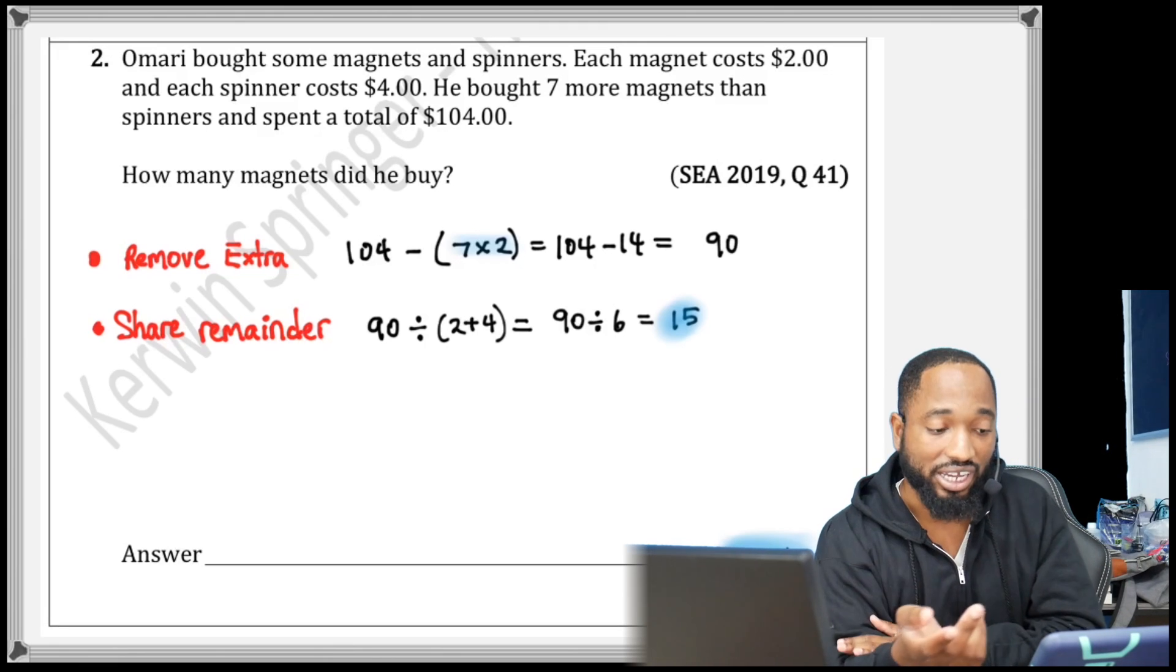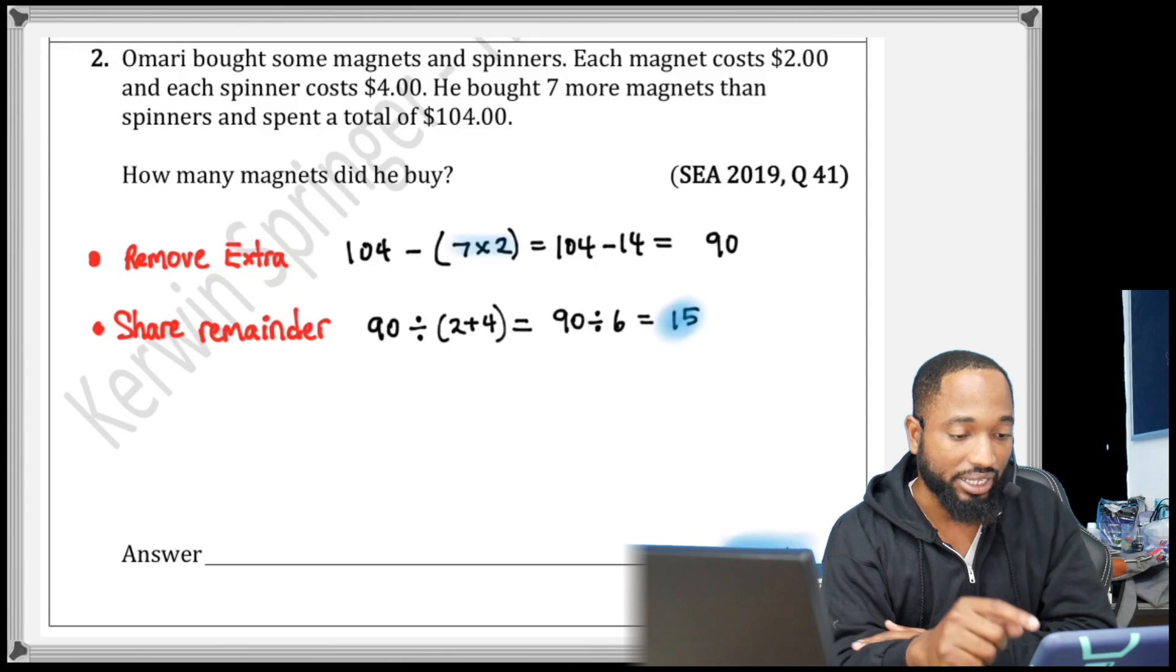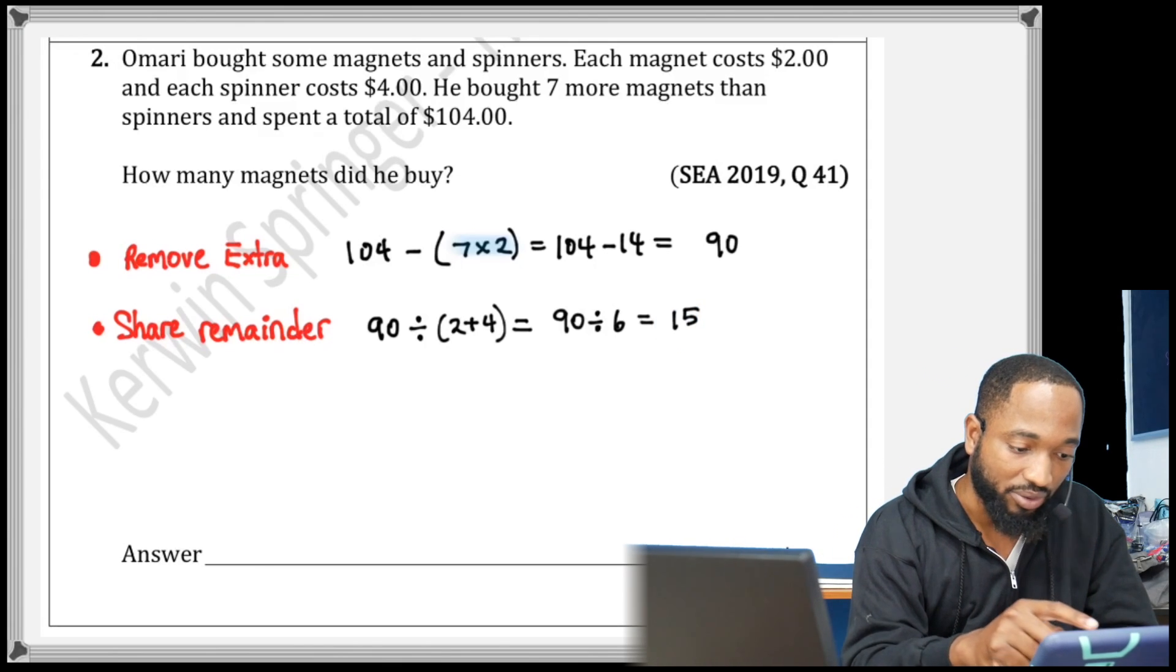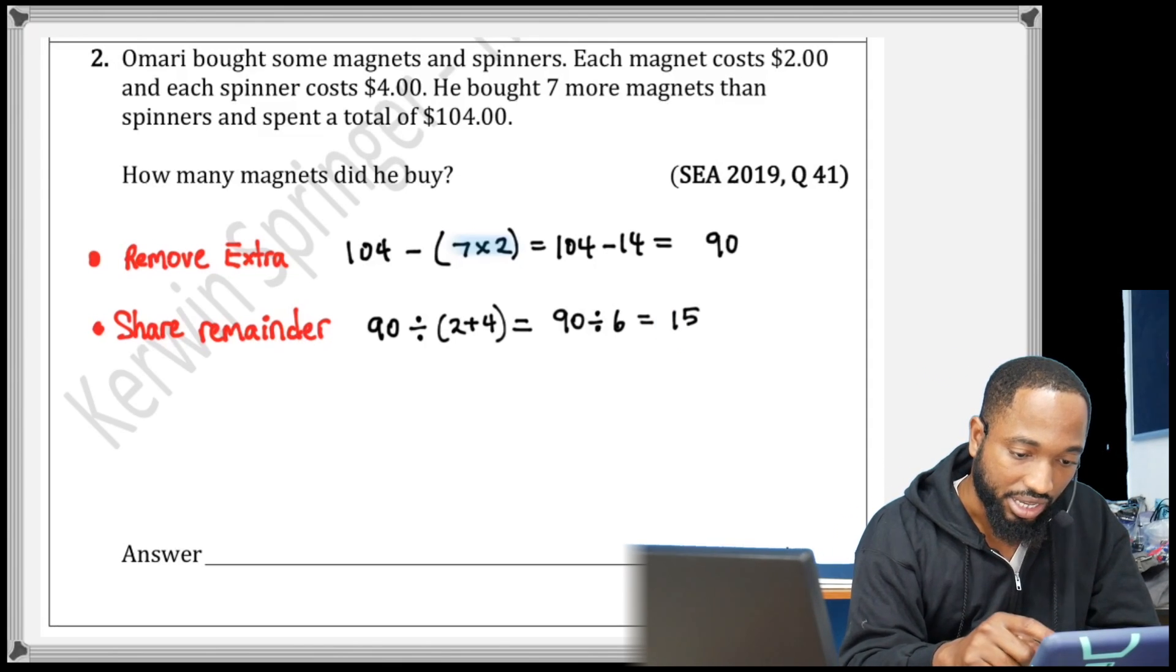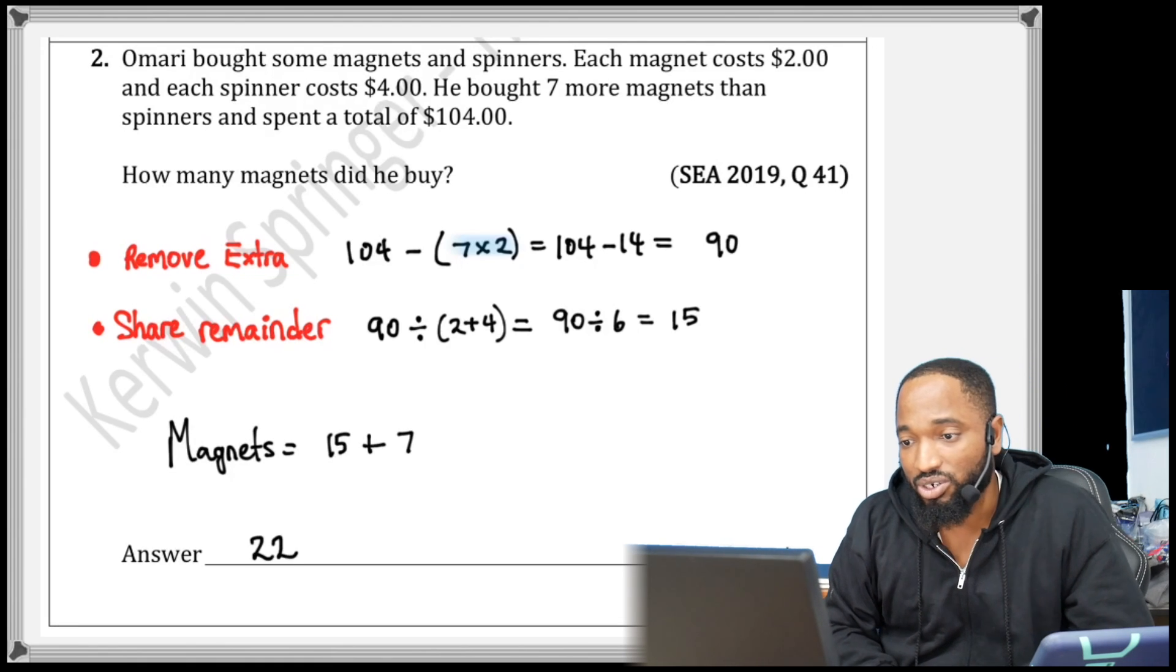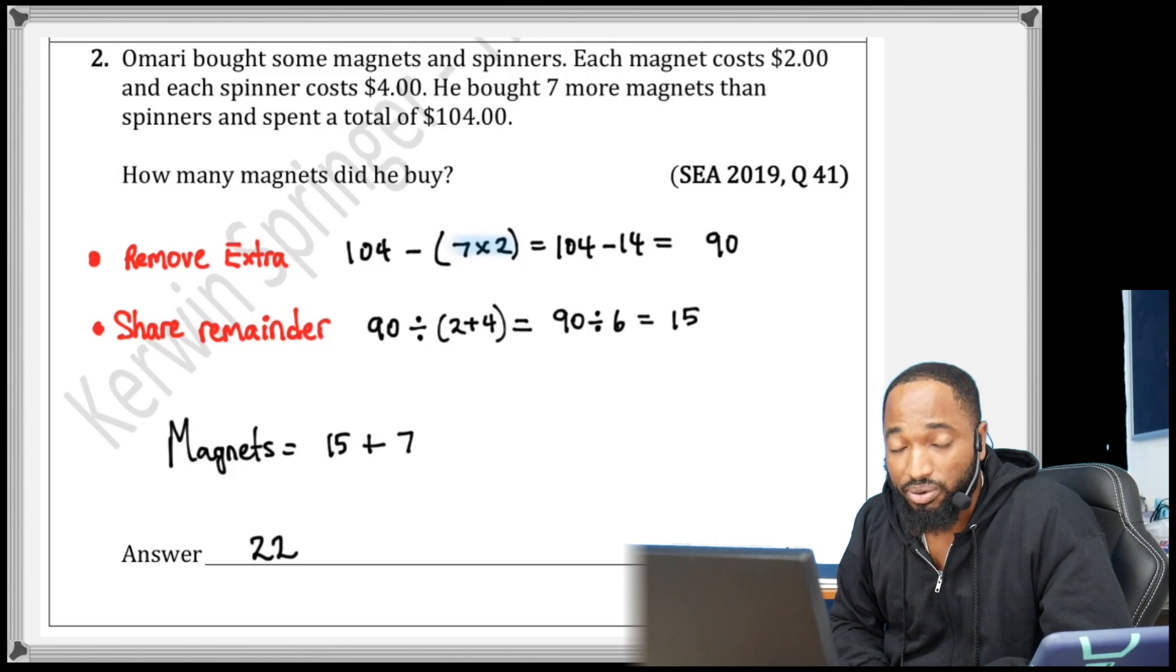It takes a little practice. Try and do it again without watching the solutions. So the magnets is going to be the 15 plus 7, which is 22. And that was the answer for this question last year.